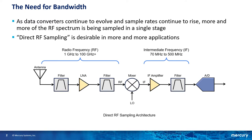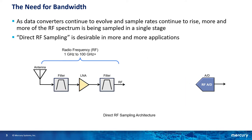First we need an A to D converter that can sample more of the RF spectrum, so we use an RF A to D. Because the A to D can sample the RF directly, we don't need to translate it down to the IF, so we can remove the mixer and move the converter to the RF source.